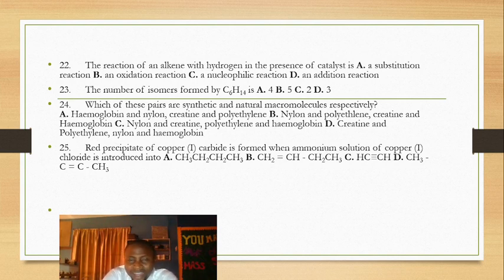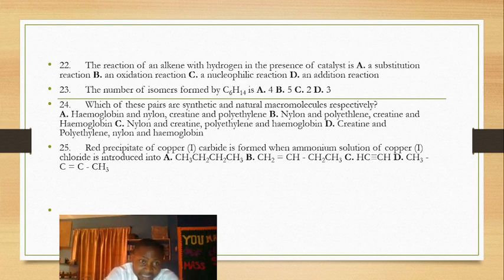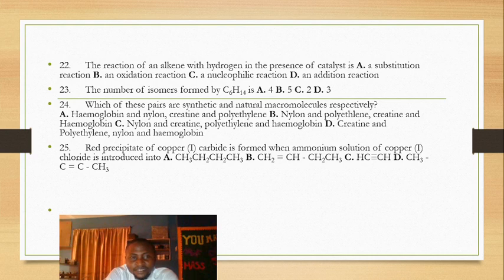Question 23: the number of isomers. This involves compounds with the same molecular formula but different structures. Time does not permit a full explanation, but this will be covered in another lesson. The answer is five.